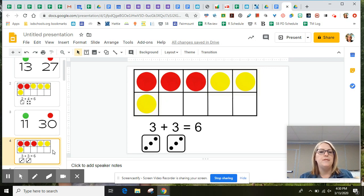How many red dots do you see? You're right, there are three. How many yellow dots do you see? There are three yellow dots as well.